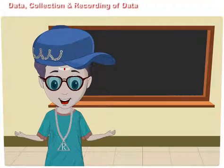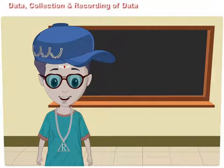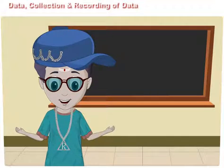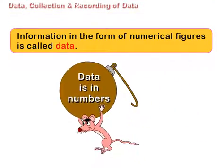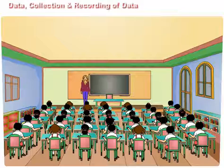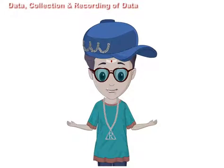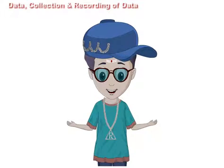Friends, we have learnt about pictographs and bar graphs. Now we shall learn the collection of data and its representation in the form of pictographs and bar graphs. Let us understand the terms data, collection and recording of data. Information in the form of numerical figures is called data. For example, there are 35 students in class 5 is numerical information and is therefore data. Anju is beautiful is not numerical information, so it is not data. There are different ways of collection and recording of information or data. Let us observe a few examples of collection of data.